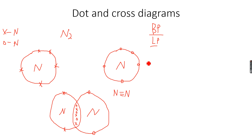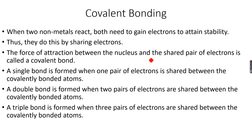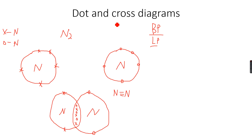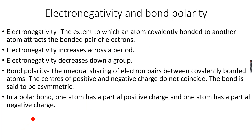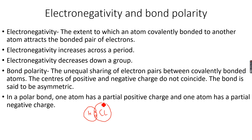So bonding pairs and lone pairs — you should remember these because we are going to use them going forward. This is basically covalent bonding. It can also happen between non-metals of different elements, like hydrogen and chlorine. Let's also discuss electronegativity and bond polarity. Hydrogen is a very small atom and chlorine has seven electrons in its outermost shell, so they will form one single covalent bond.